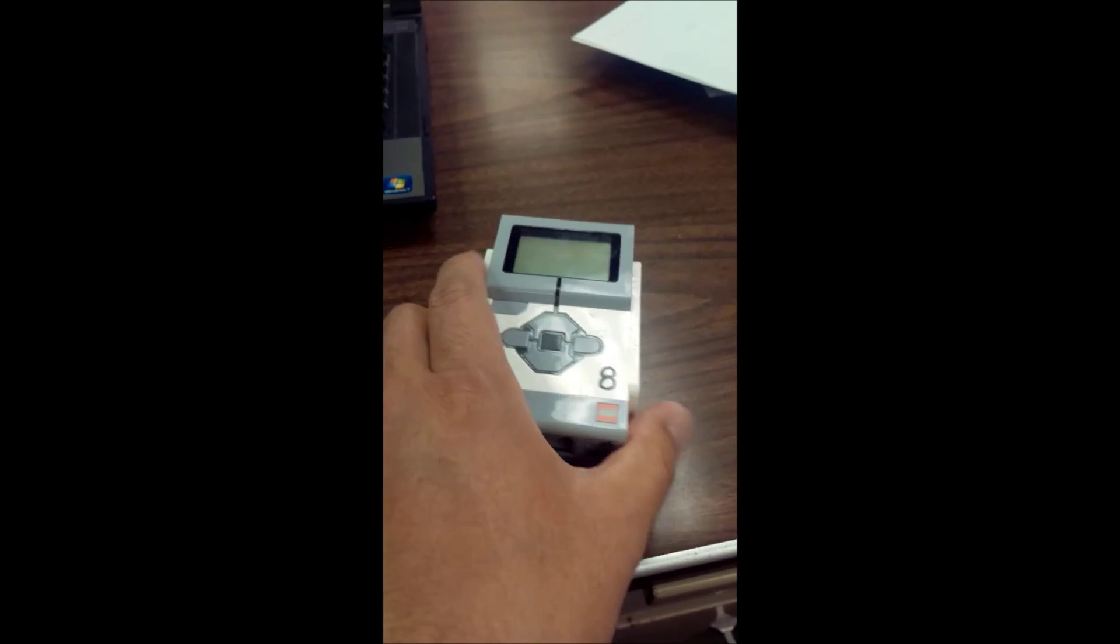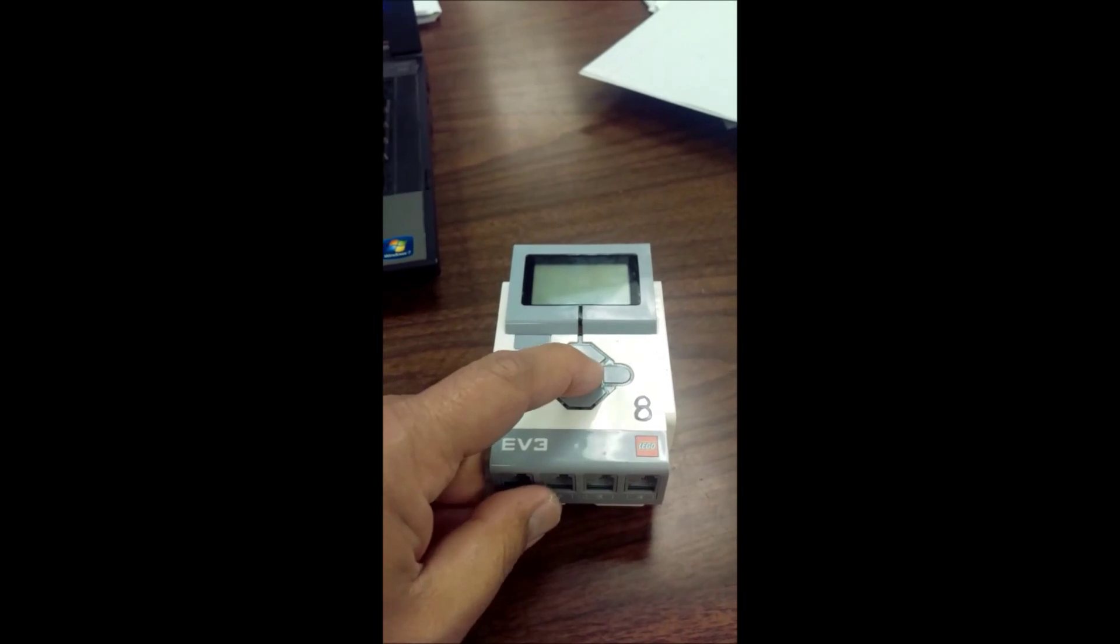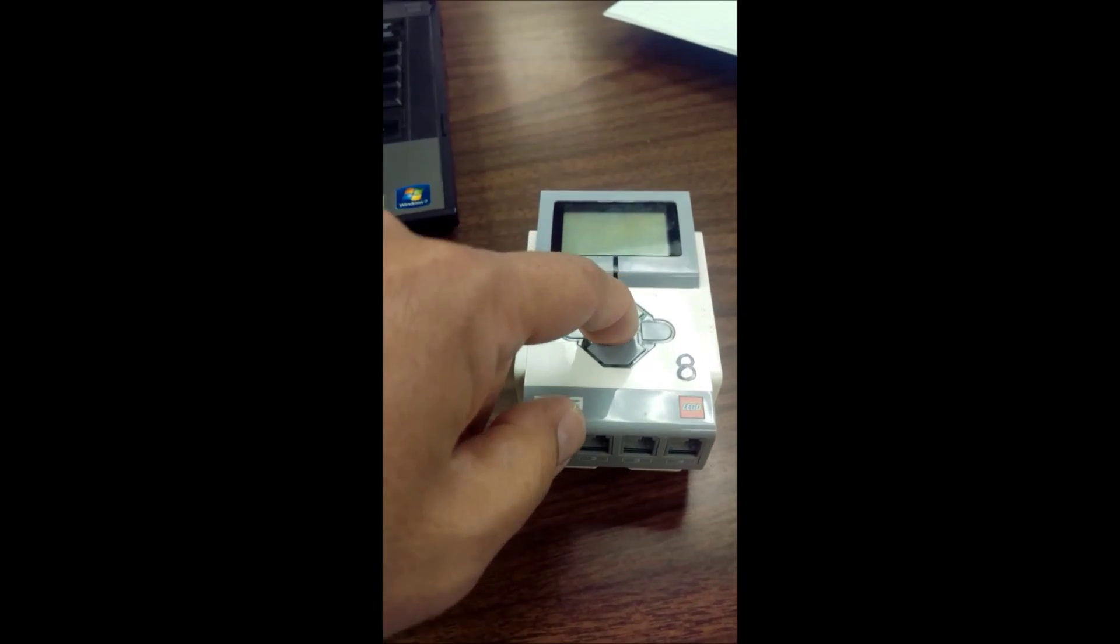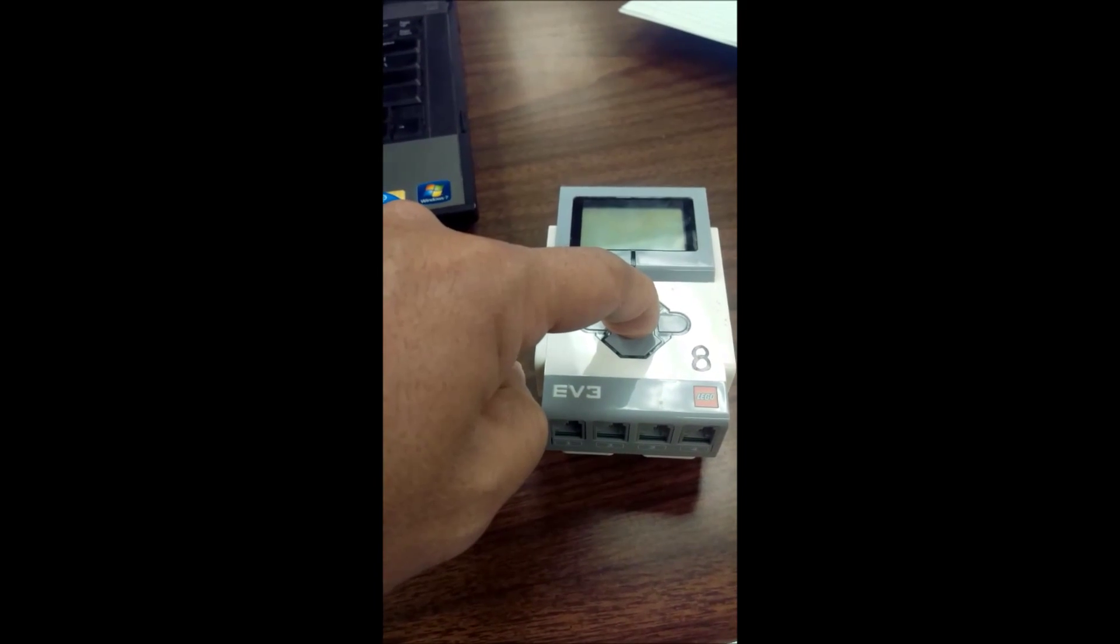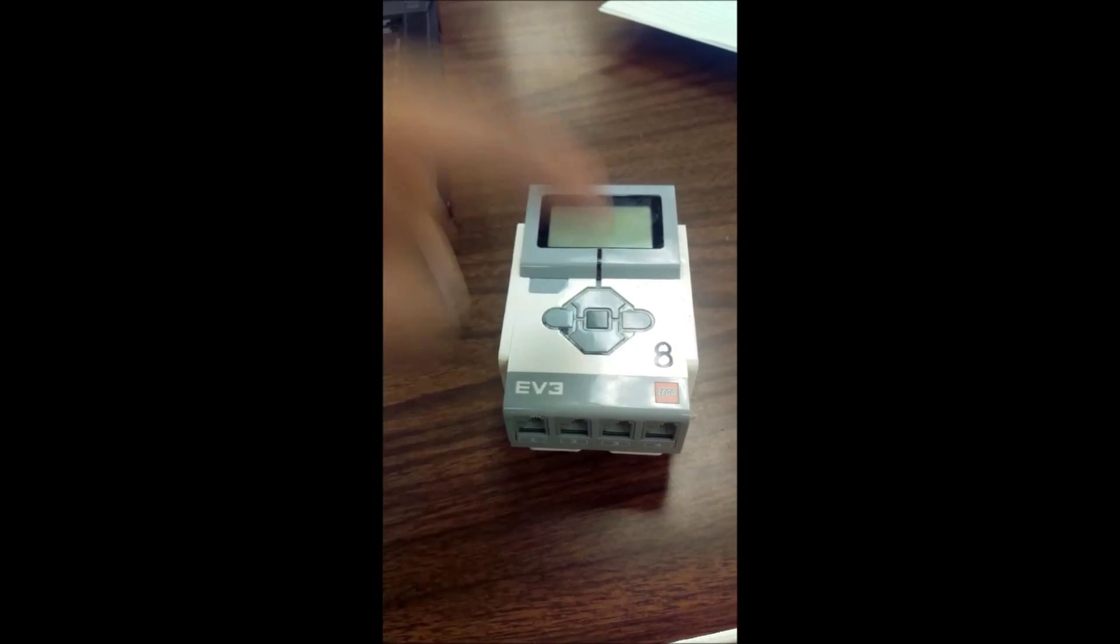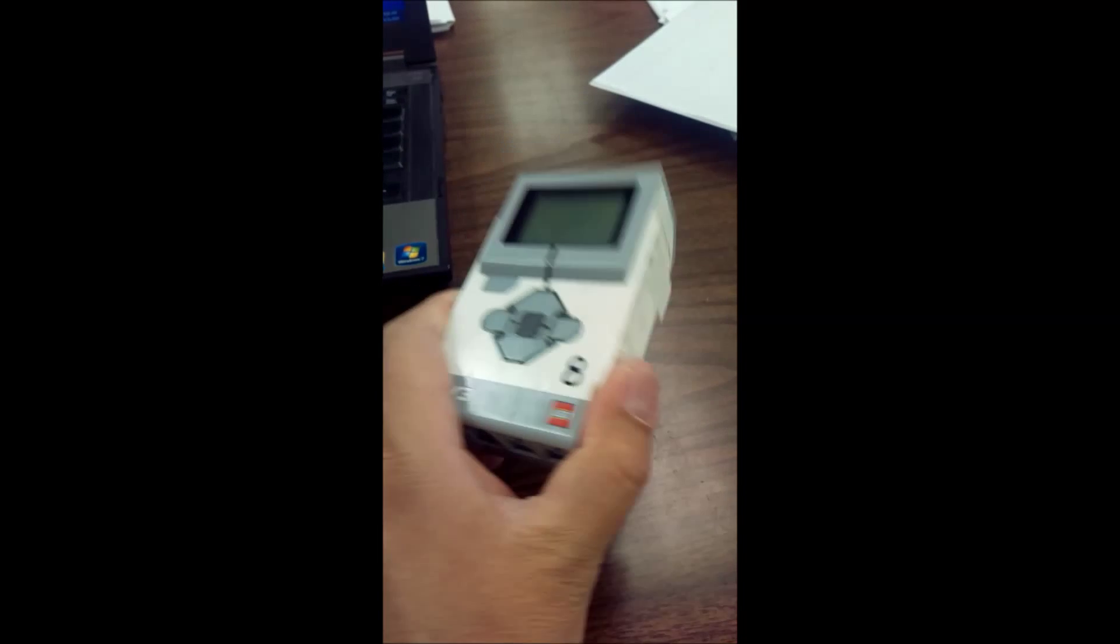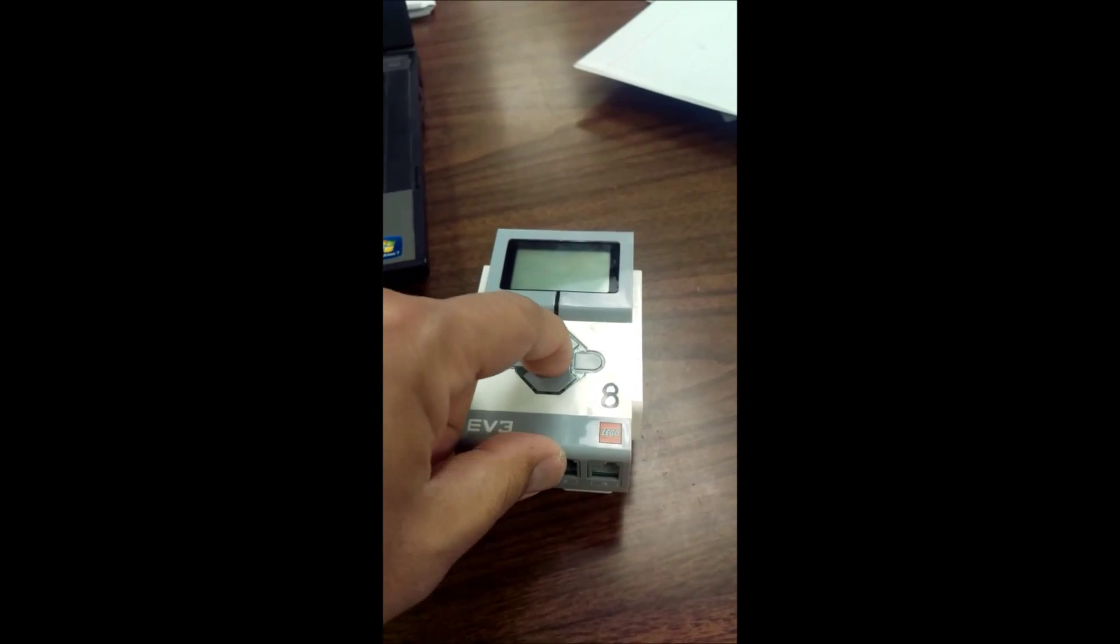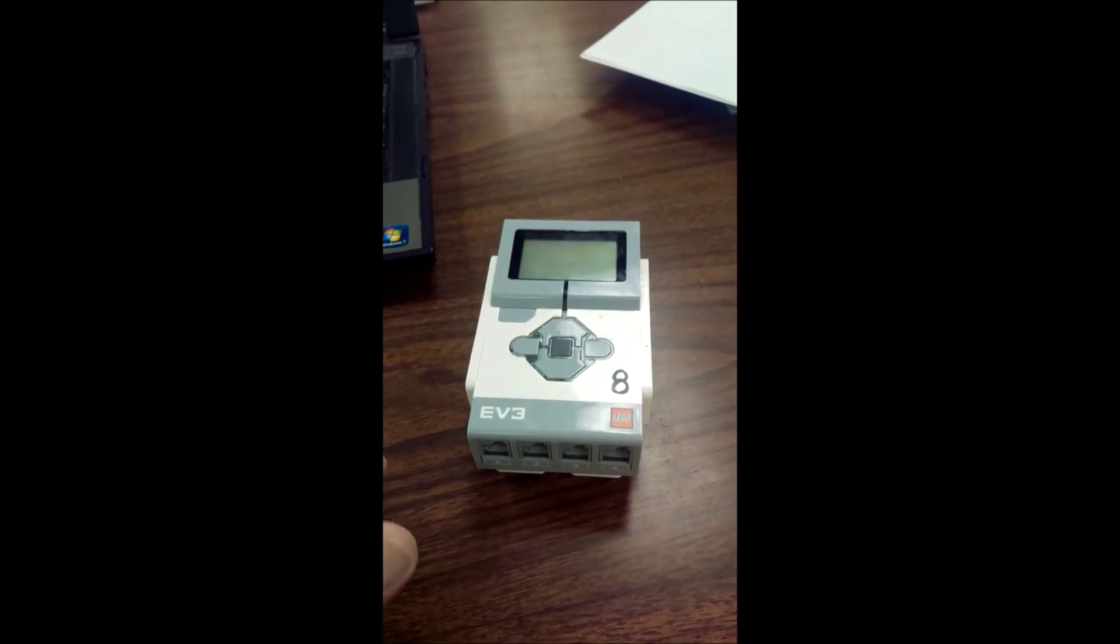Okay, so here we have the EV3 Mindstorms brick. I have the battery on it and here's the problem. You press the button, and let me hold it down just to show it doesn't work. This thing is just not turning on and my students can't have a brick that doesn't work. So here's a trick I do to get this thing to work.